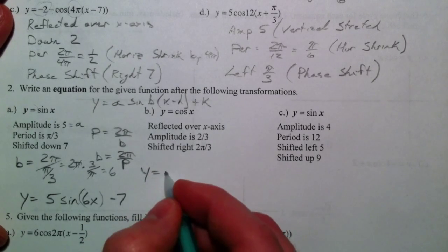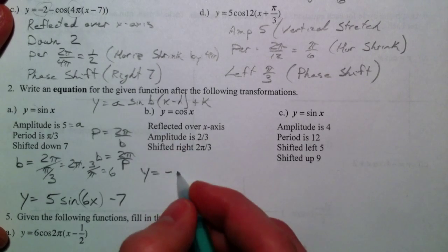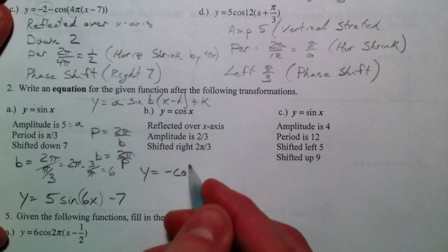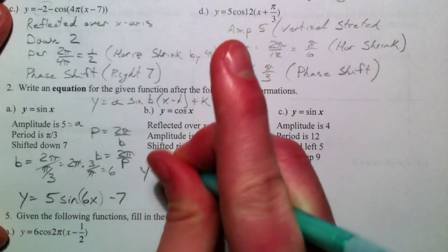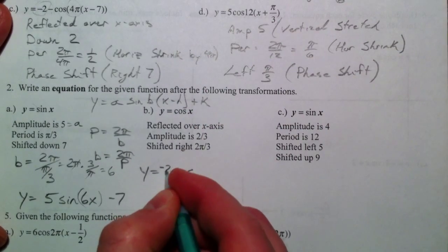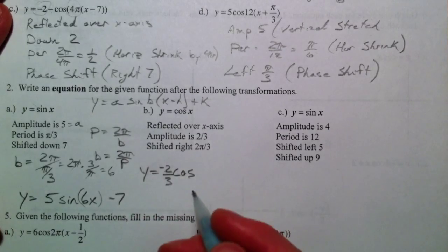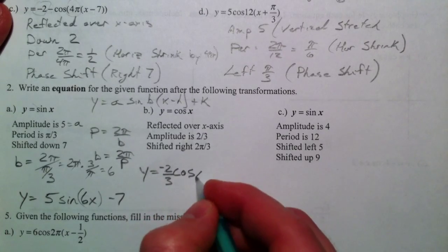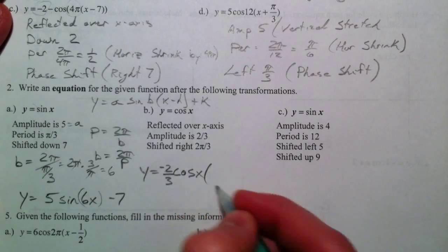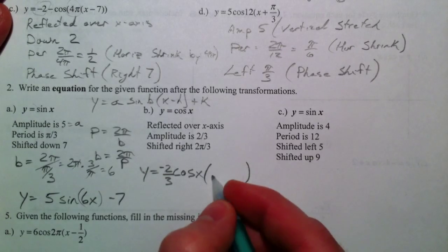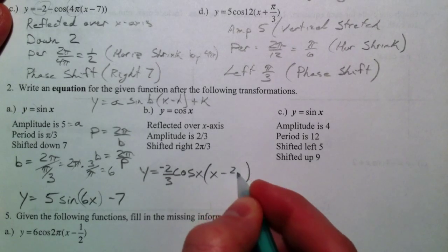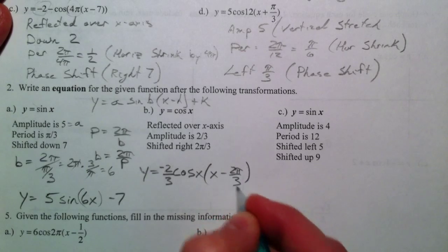Reflected over the x axis, so we need a negative. We're using a cosine this time. Amplitude is 2 thirds, so I'm going to put a 2 thirds with the negative. Shifted right, 2 pi over 3. And so that's with the x. And to shift it right, we actually need to subtract. So minus 2 pi over 3.